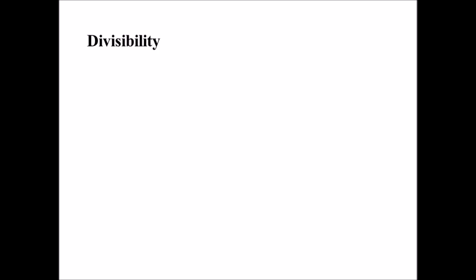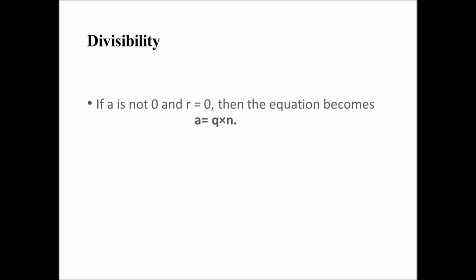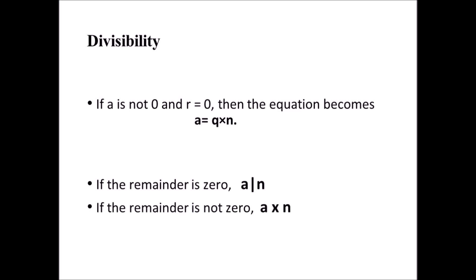Let us briefly discuss divisibility, a topic we often encounter in cryptography. If A is not 0 and we let R equal 0 in the division relation, we get A equals Q times N. We say that N divides A, or N is a divisor of A. When we are not interested in the value of Q, we can write the relationship as: A is divisible by N. If the remainder is not 0, then N does not divide A.